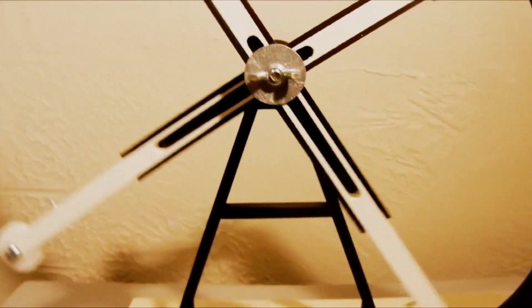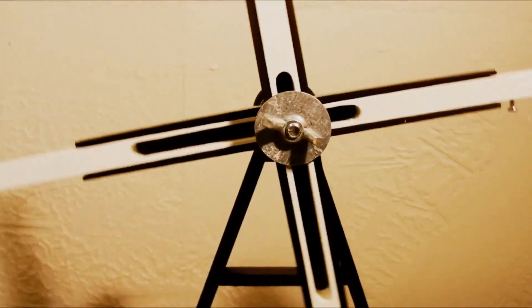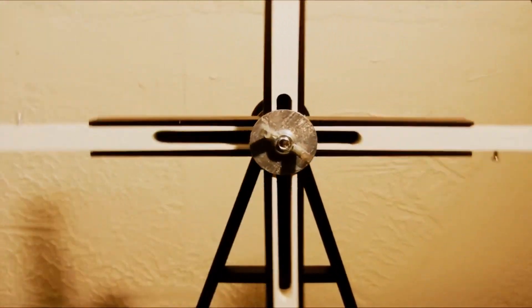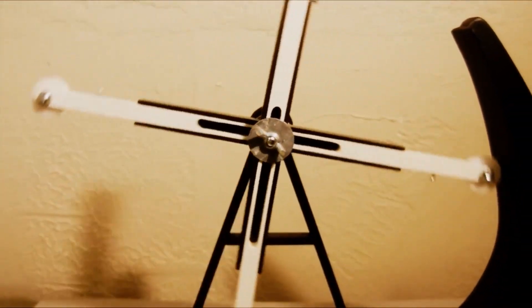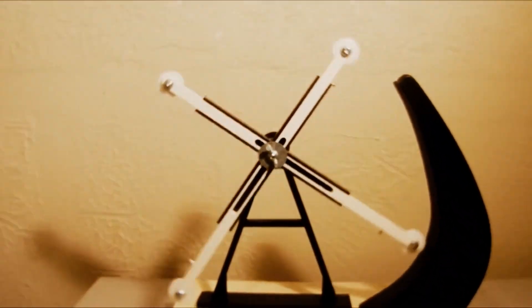The two previous devices are types of gravity wheels. Gravity wheels are supposed to work by distributing the weight on one side of the wheel further from the center than the other side, employing a form of leverage to induce rotation.